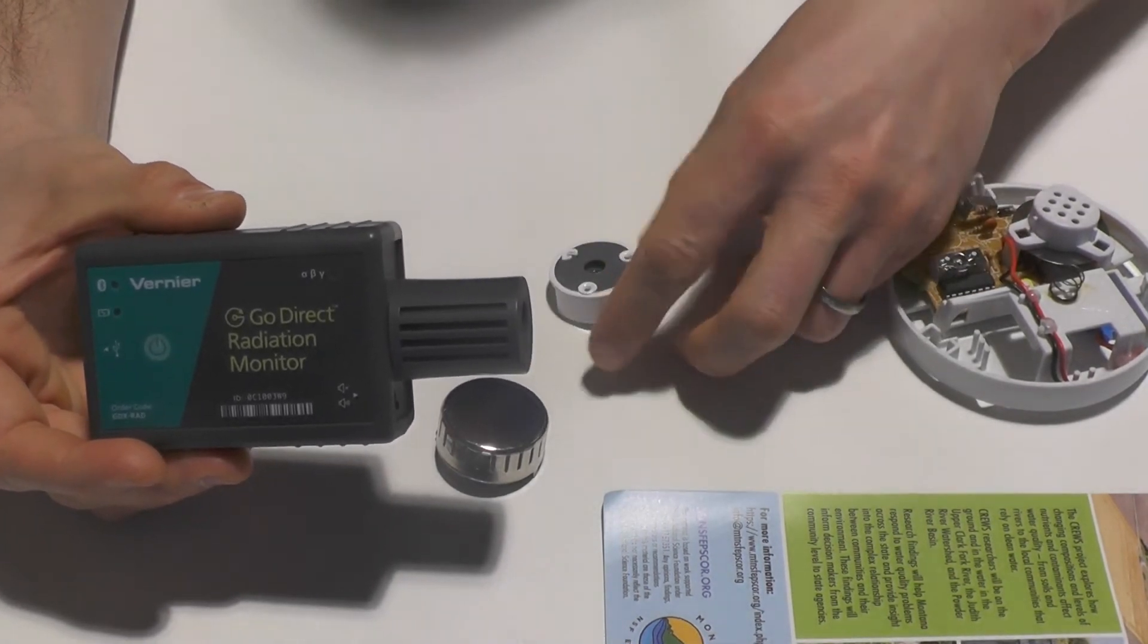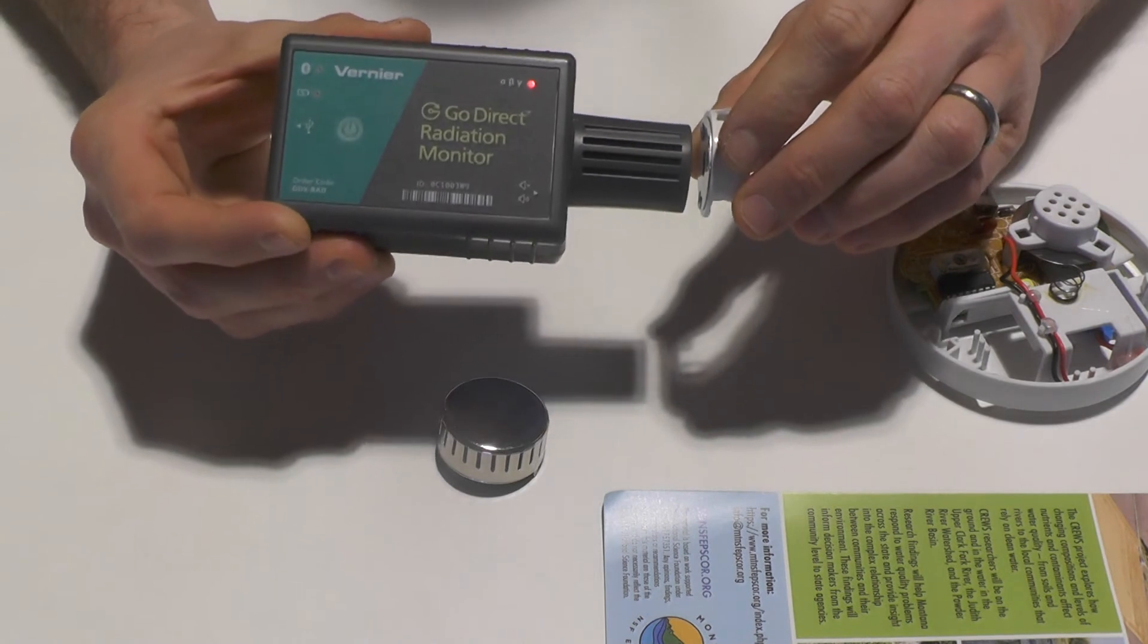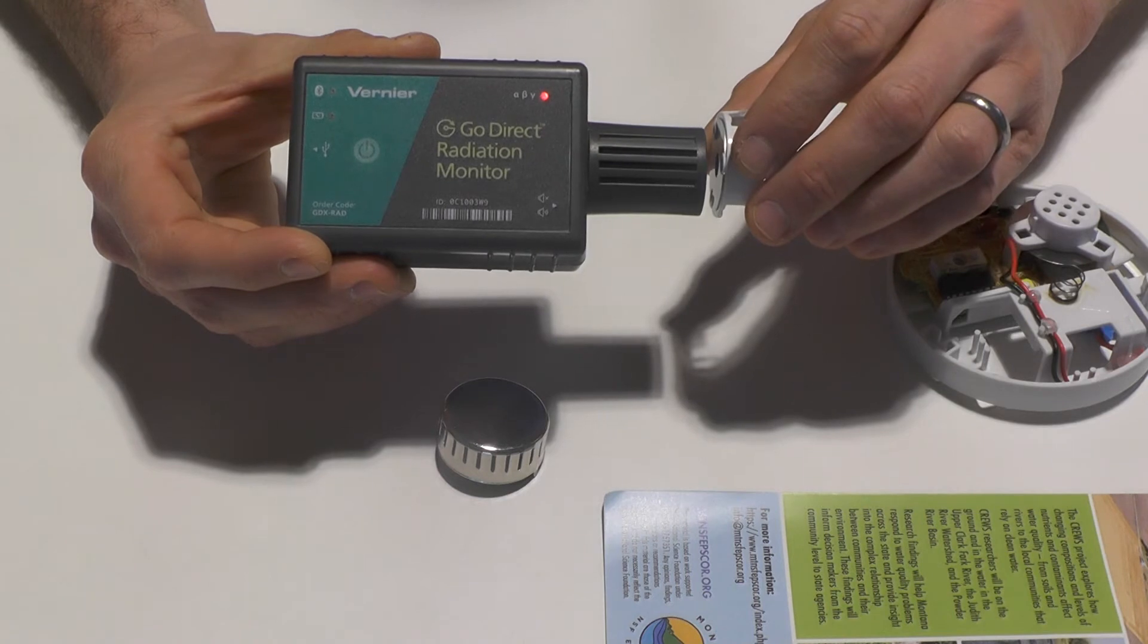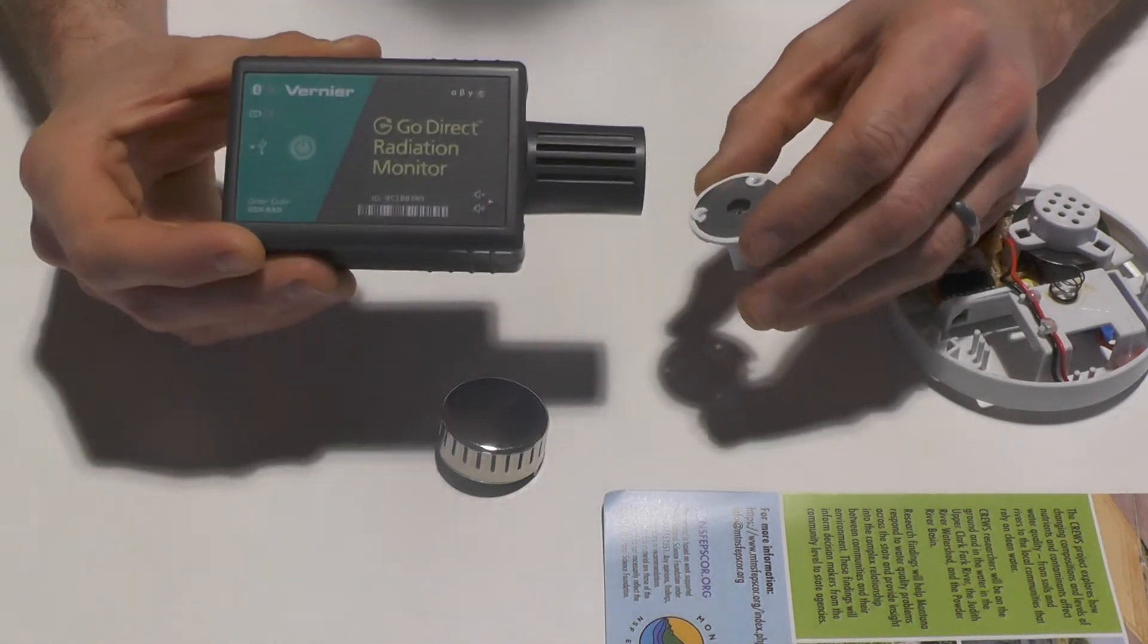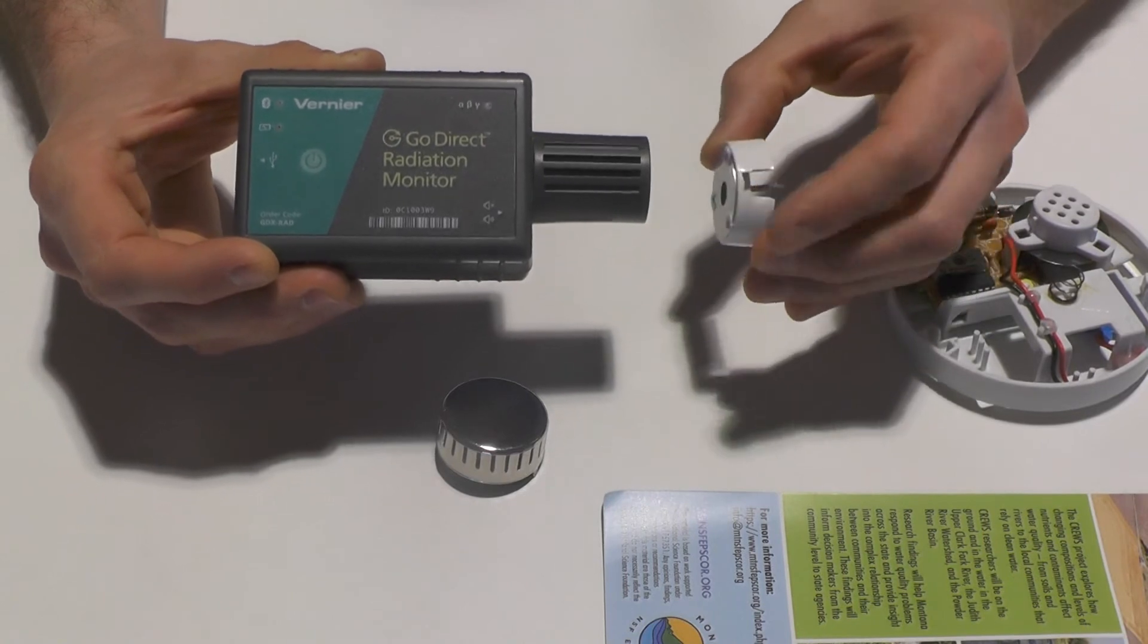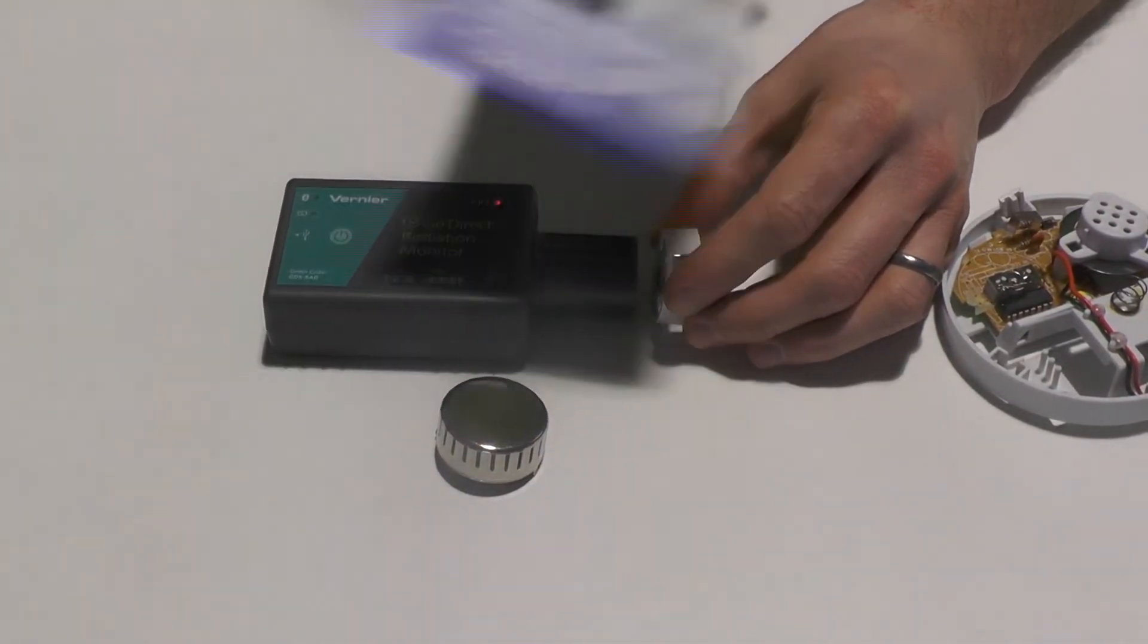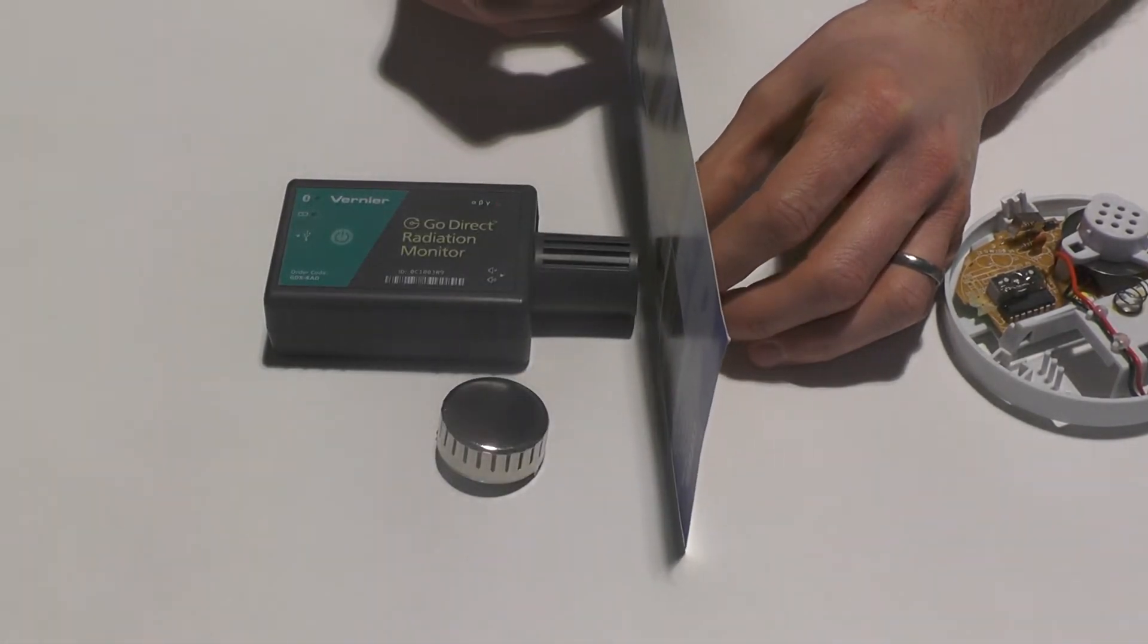But if we take it and we put it up to the little radioactive bit, it's going to go crazy. And that is because there is a little piece of radiation or a radioactive material right inside of there. This radioactive material is not very energetic as I mentioned. So I'm going to hold it up here. And if I take this piece of paper here and put it in between, the beeping goes away for the most part. There's still a little beeping.